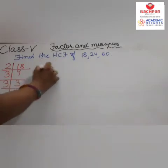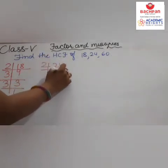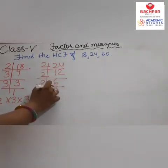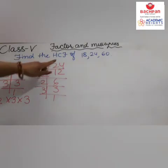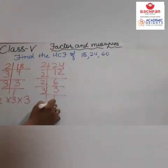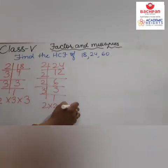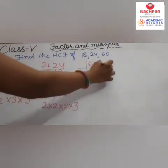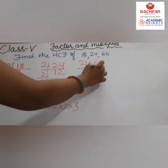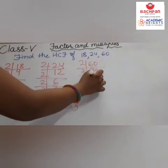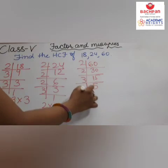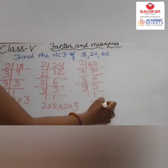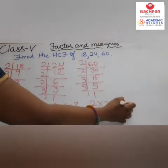Next, the prime factorization of 24: 24 divided by 2 gives 12, 12 divided by 2 gives 6, 6 divided by 2 gives 3. So 24 equals 2 times 2 times 2 times 3. The next is 60: 60 divided by 2 gives 30, 30 divided by 2 gives 15, 15 divided by 3 gives 5. So 60 equals 2 times 2 times 3 times 5.